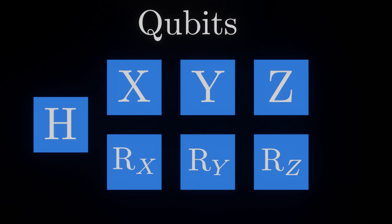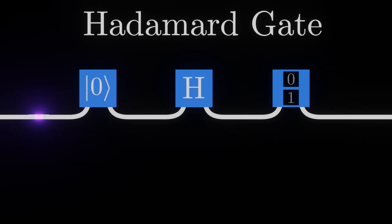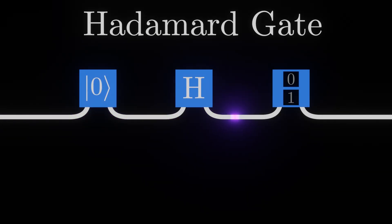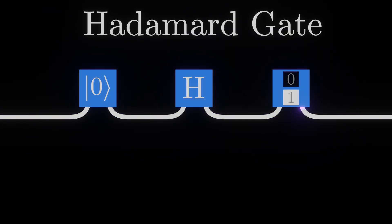We'll start by focusing on the Hadamard gate. If we reset a qubit, then send it through the Hadamard gate, you find that half the time we measure it as 0, and half the time we measure it as 1.